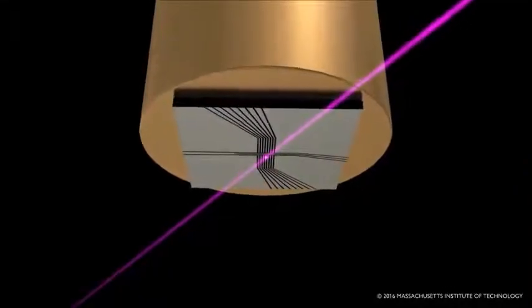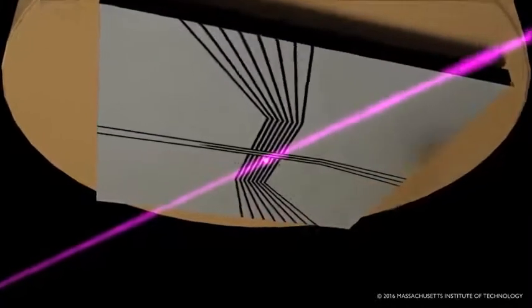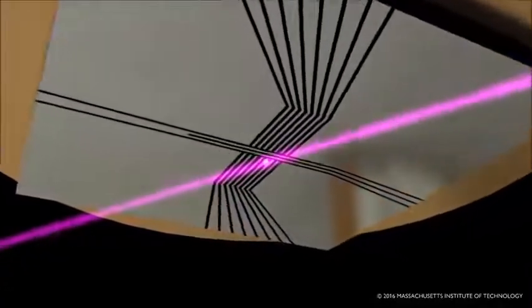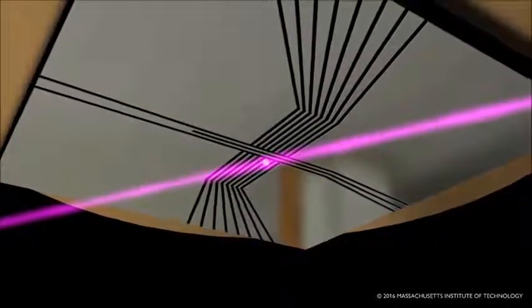Trapping fields are produced below the chip by applying electric fields to the patterned electrodes on its surface. Individual ions trapped in this way can be used for quantum information processing experiments, with the ultimate goal being the development of a quantum computer based on this technology.